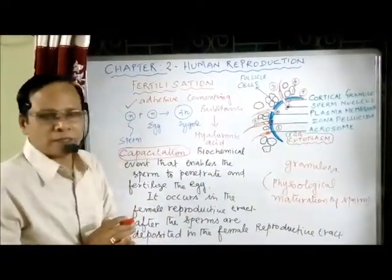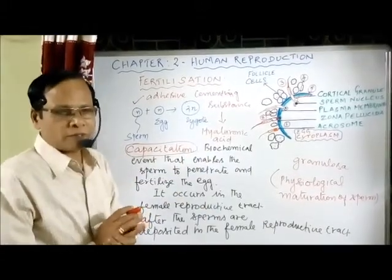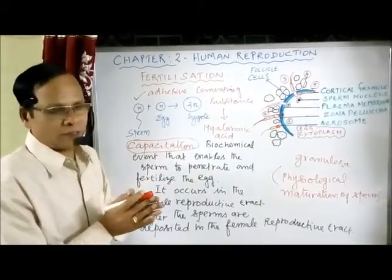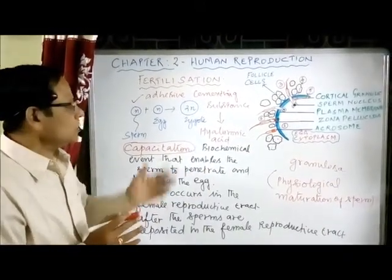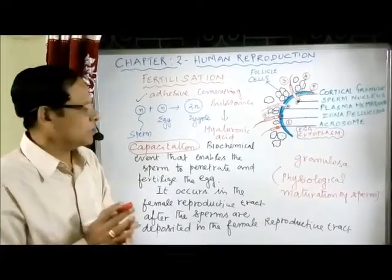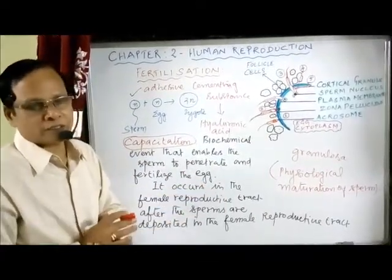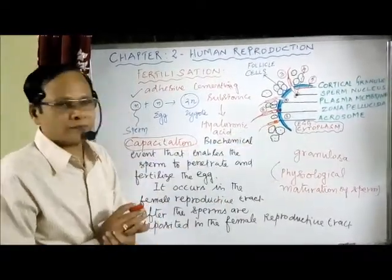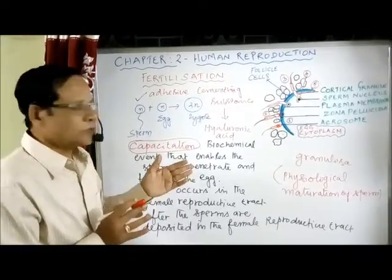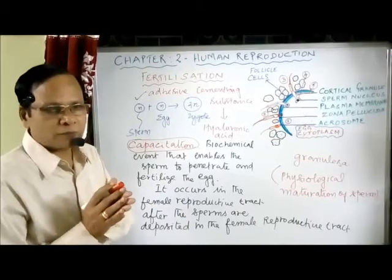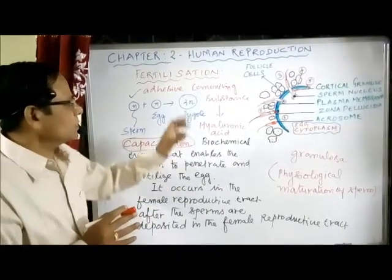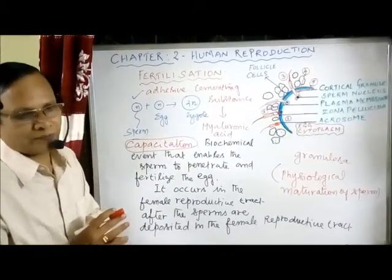The cells of the corona radiata are held together by hyaluronic acid. When the sperm wants to enter the ooplasm, it must penetrate and separate the follicle cells. The sperm acrosome contains a proteolytic enzyme called hyaluronidase. The acrosome degenerates and ruptures, releasing hyaluronidase. All these reactions together are called acrosomal reactions.